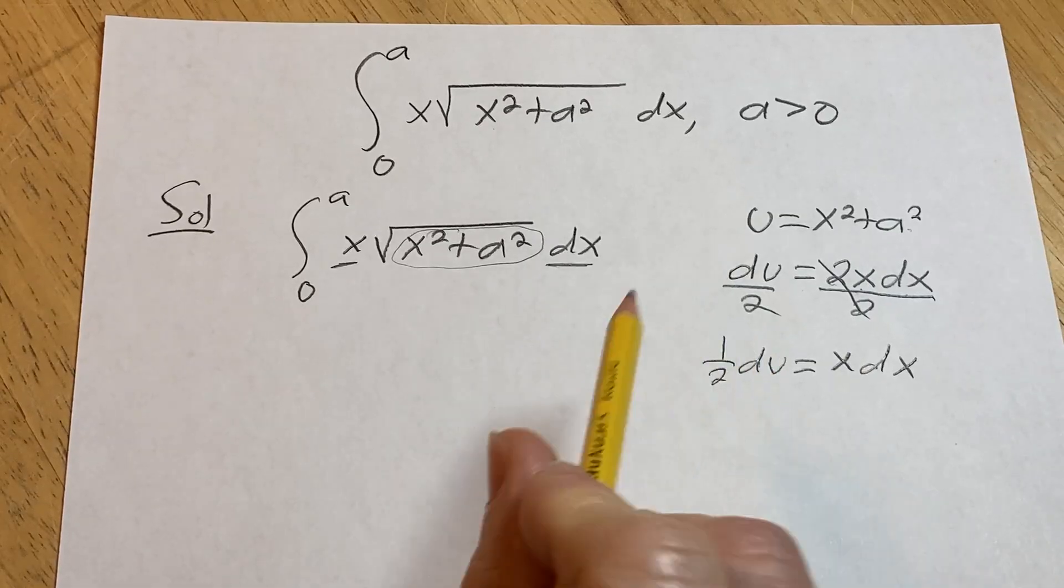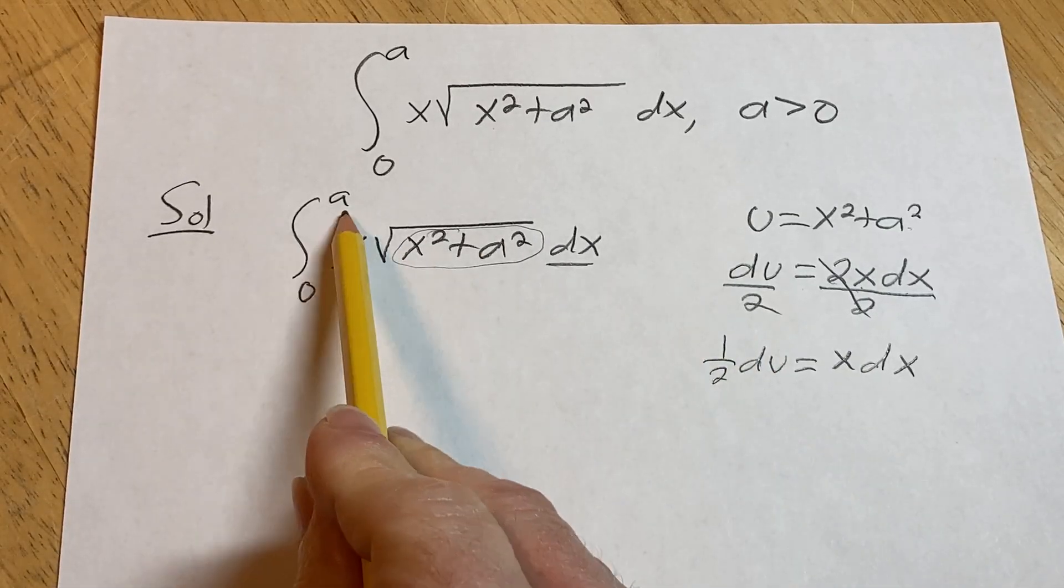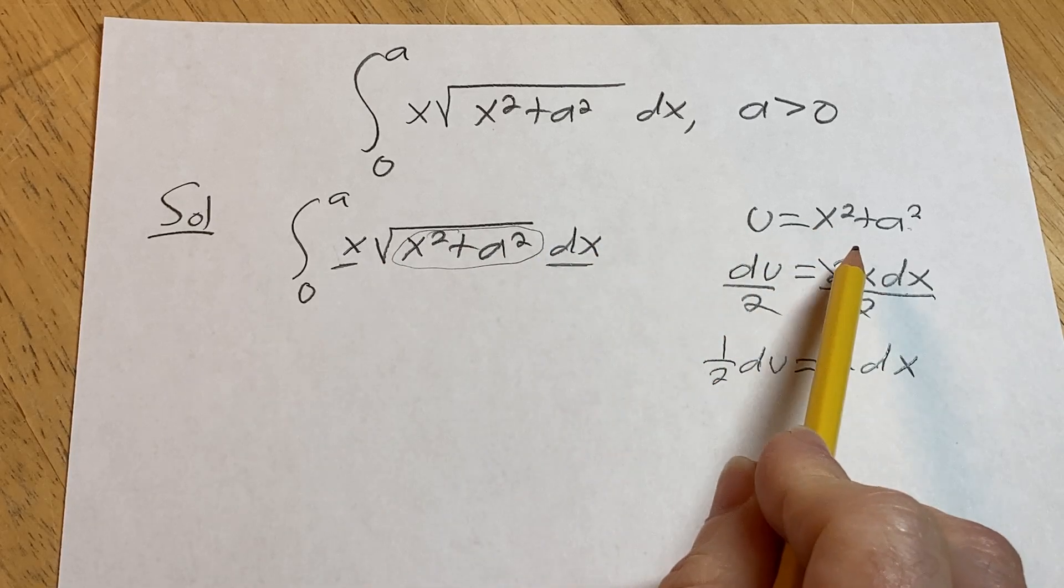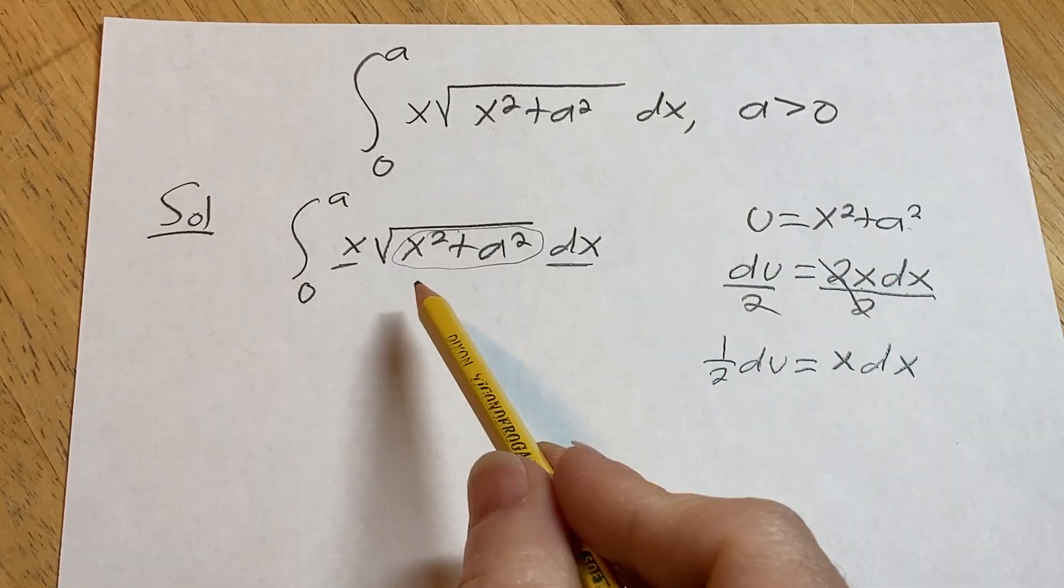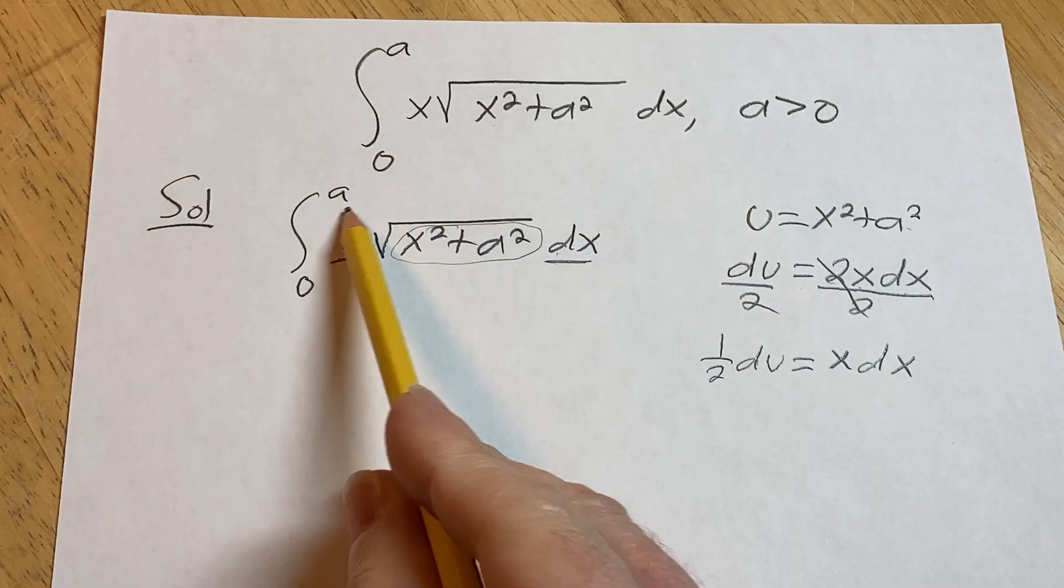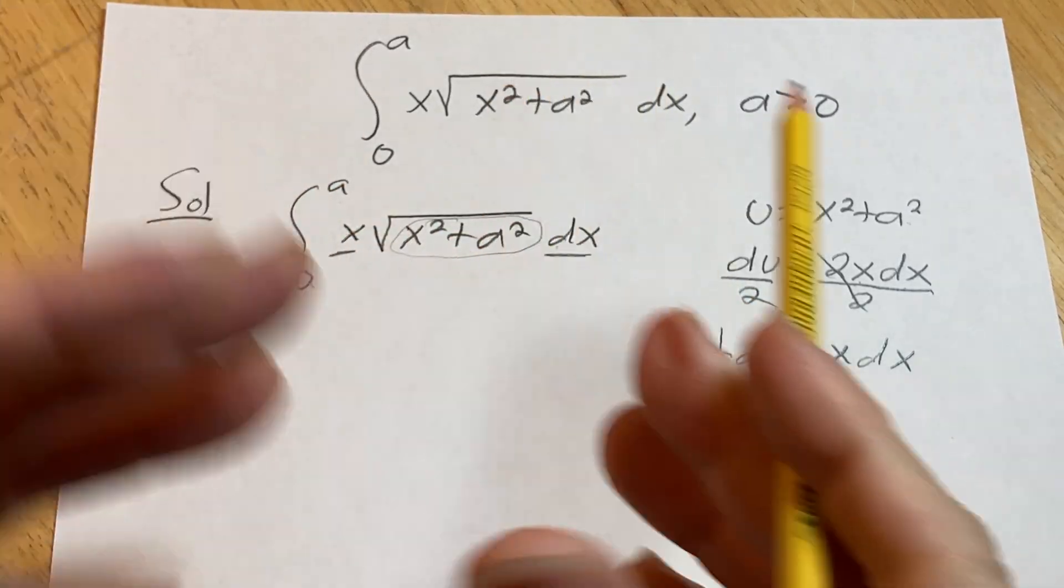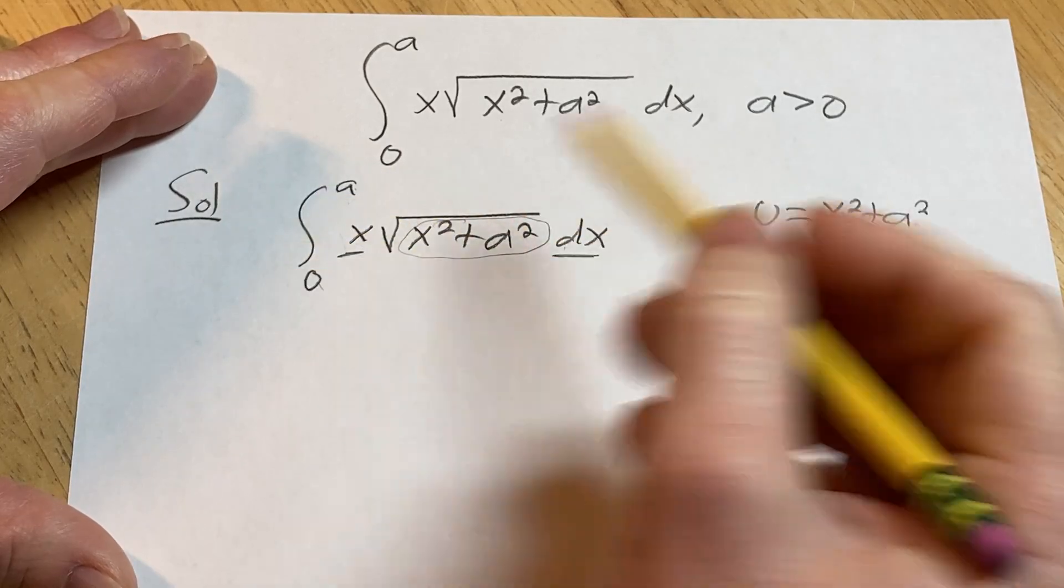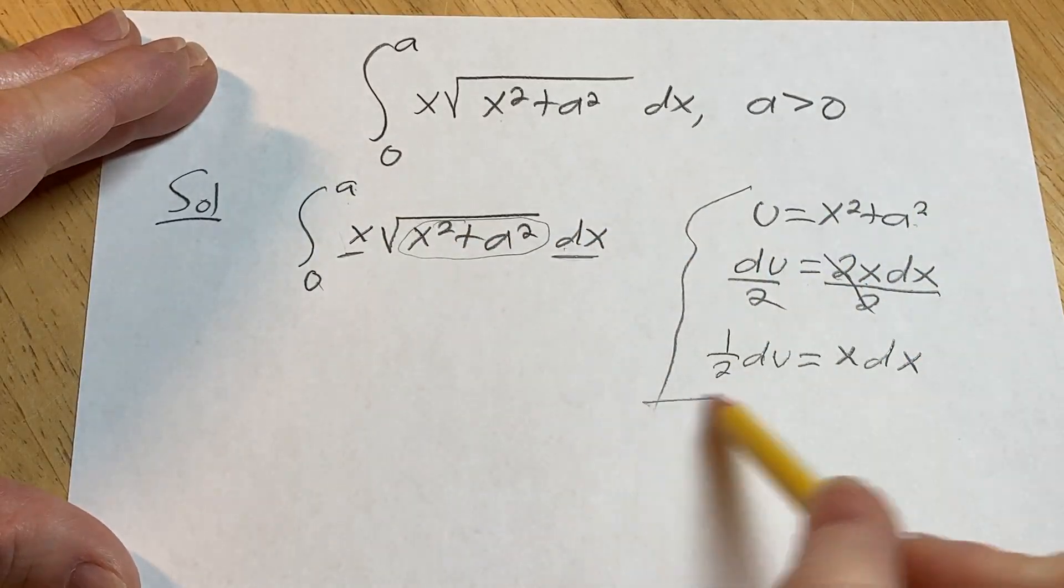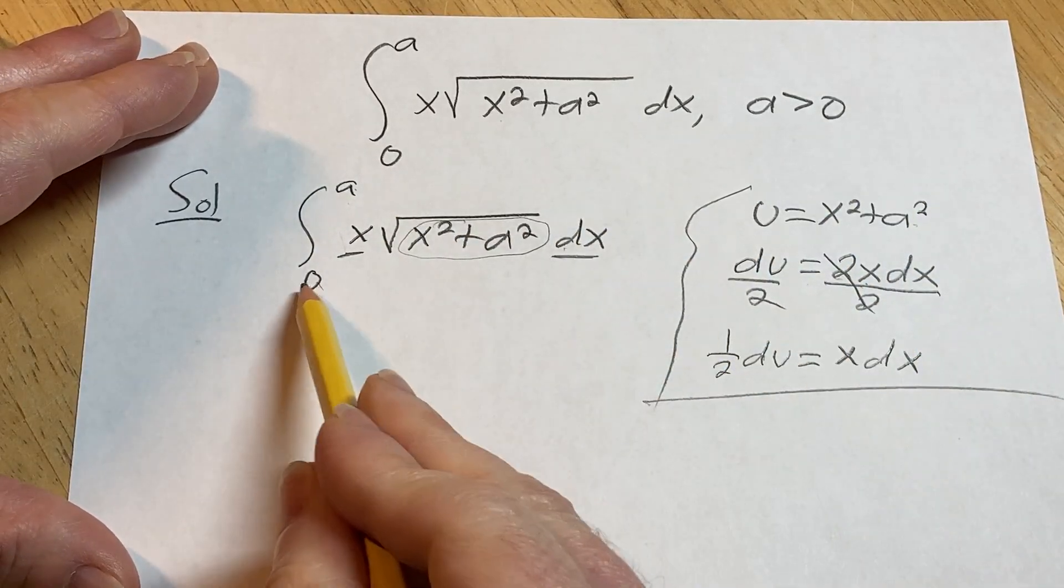Okay, so now we're almost ready to make the substitution, except this is a definite integral and we made a u substitution. So let's go ahead and change those limits. Because these limits are x limits of integration. We're doing a change of variable, changing everything from x to u. So these are x values. Let's change them to u values.